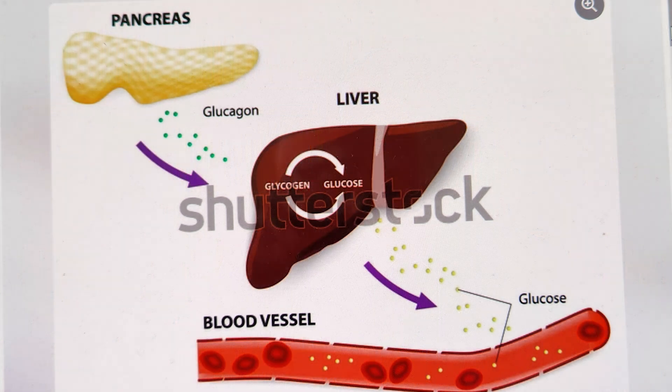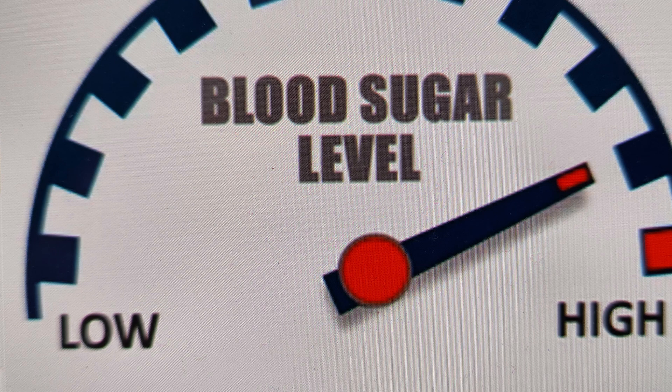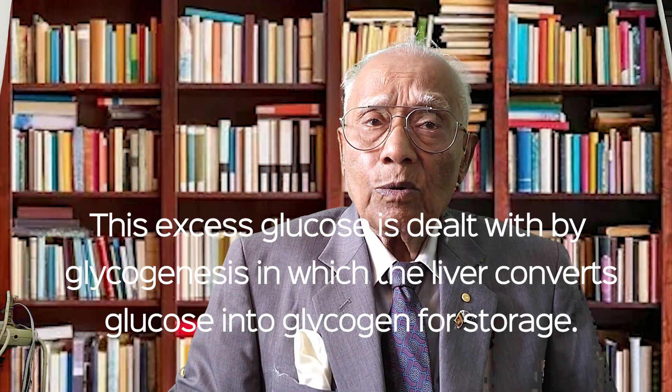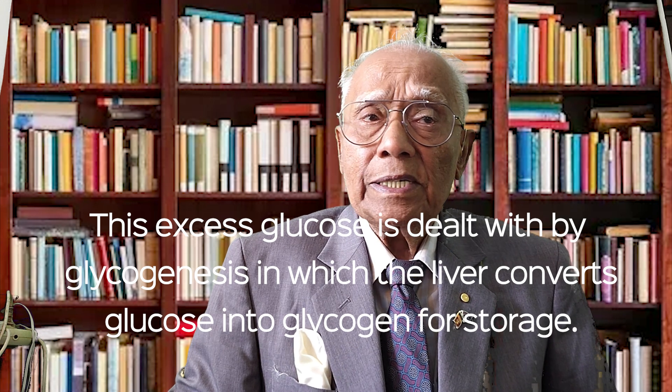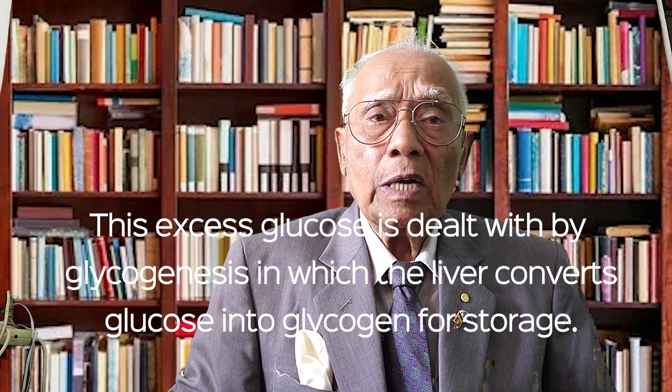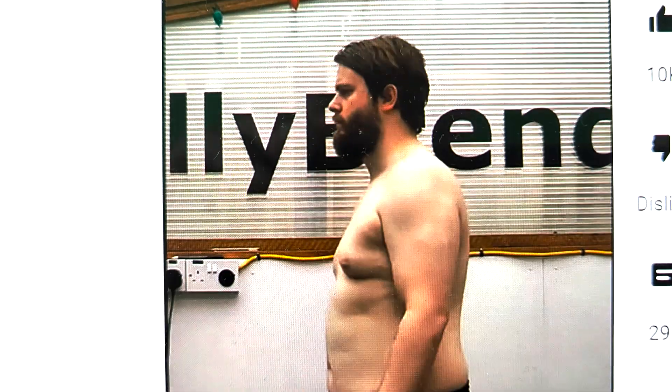The liver helps maintain blood glucose levels in response to the pancreatic hormones insulin and glucagon. After a meal, levels of blood glucose rise and glucose enters the liver. This excess glucose is dealt with by glycogenesis, in which the liver converts glucose into glycogen for storage. Both kidneys and the liver maintain your blood sugar level within the normal range under normal situations. When you exercise, blood sugar is additionally taken by the muscles for energy, and that too helps to reduce and maintain your blood sugar level.